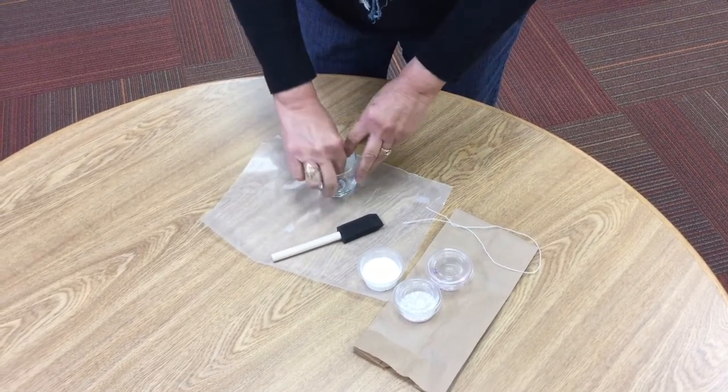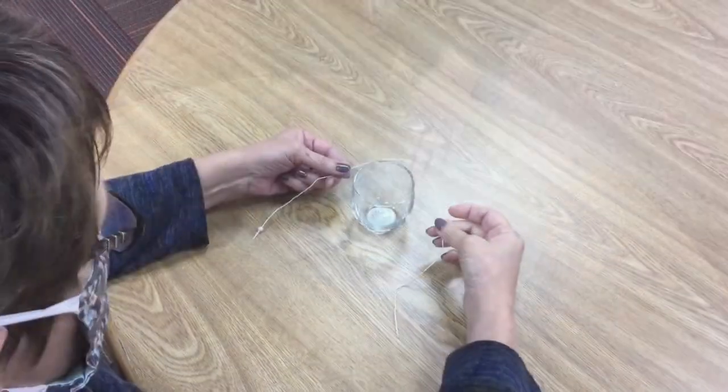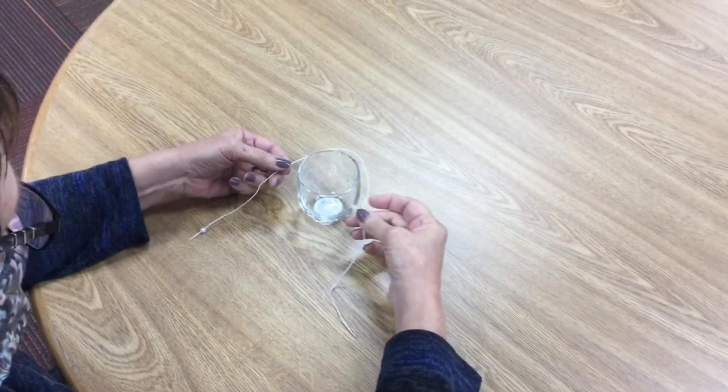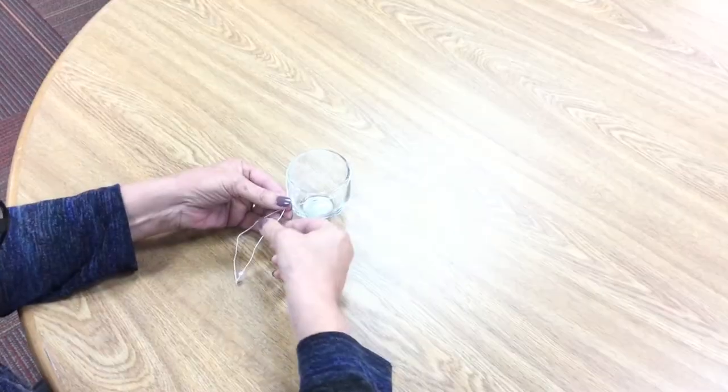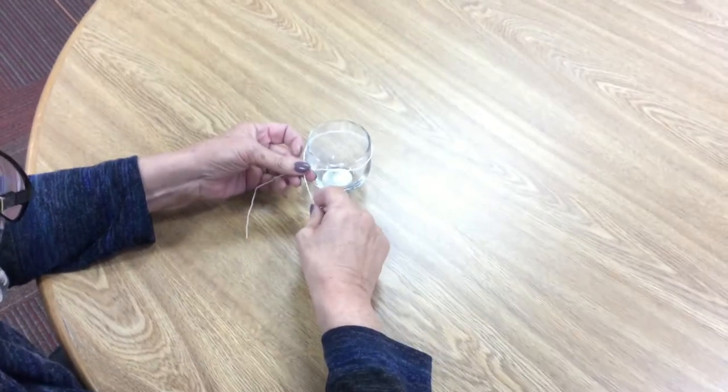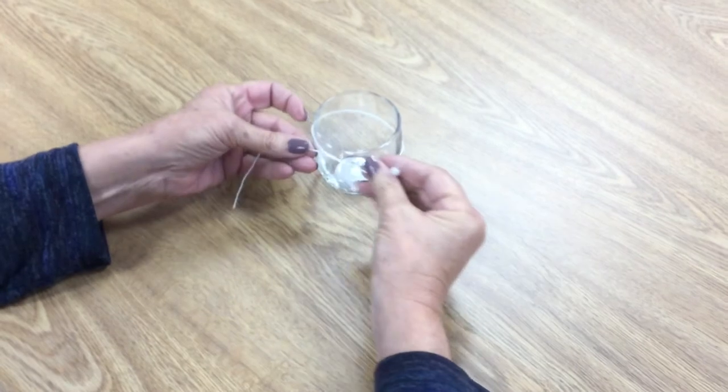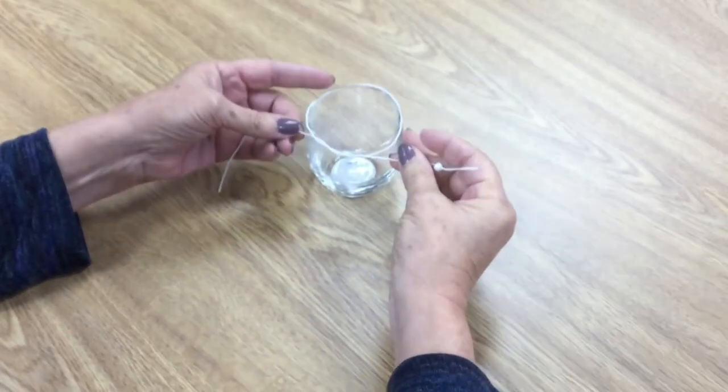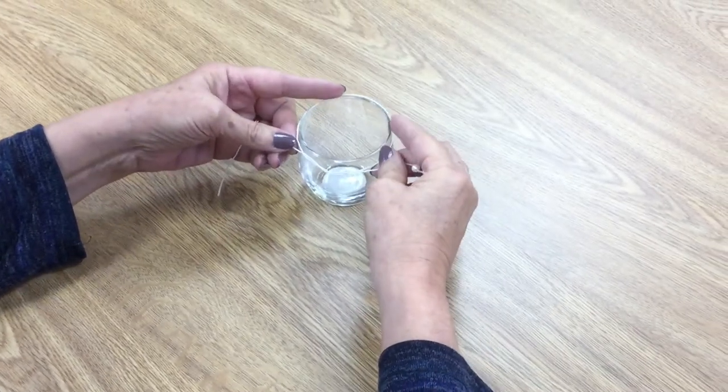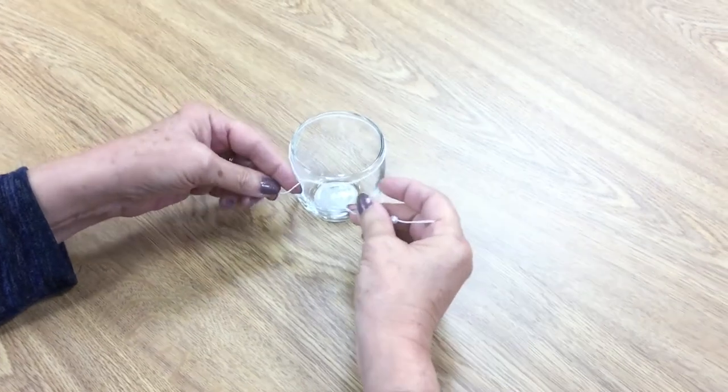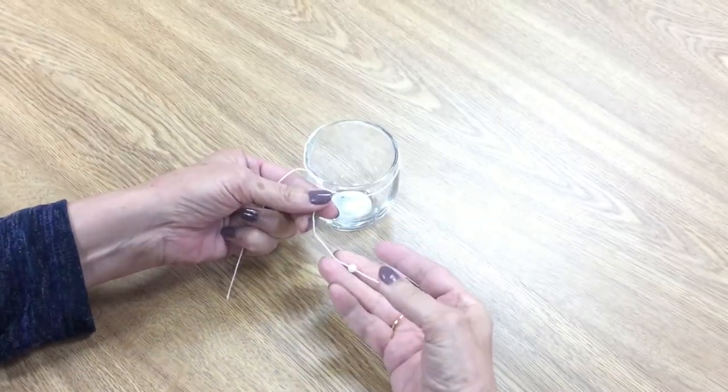First thing you want to do is take your string and get this ready before we have all the glue and everything on it. You're going to make a tie on it up towards the top like that.